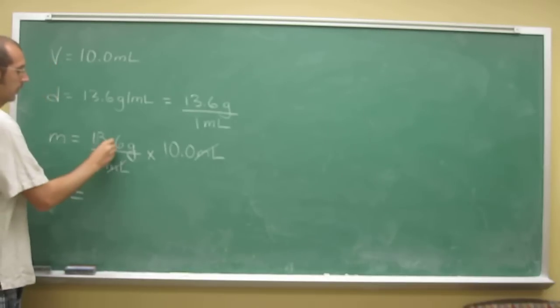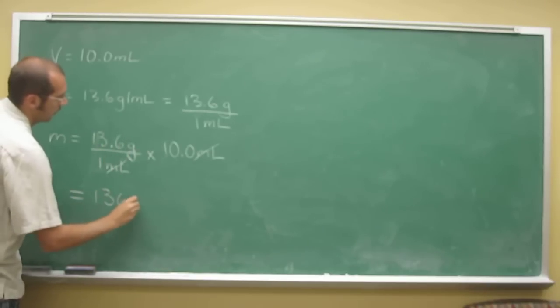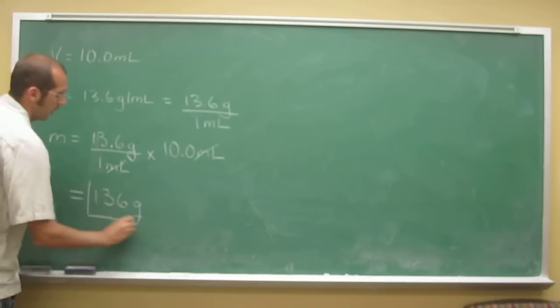And of course 10, I'm just going to move that over. Both of these have three sig figs. So 136 grams for 10 milliliters of mercury.